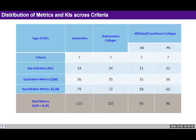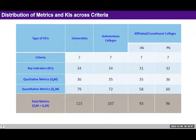Looking at the distribution of metrics and key indicators (KIs) across criteria, institutions are categorized into three types: universities, autonomous colleges, and affiliated or constituent colleges — the latter further split into UG and PG programs. There are 34 key indicators for universities, 34 for autonomous colleges, 31 for UG programs of affiliated colleges, and 32 for PG programs. Under every key indicator, metrics are provided — both qualitative and quantitative.